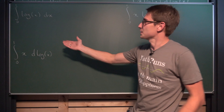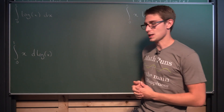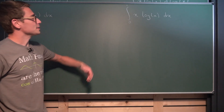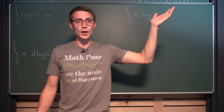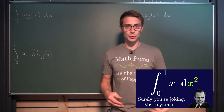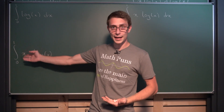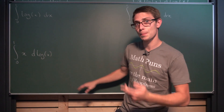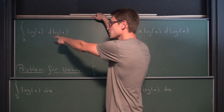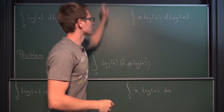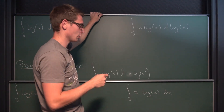The first is a standard integral — the natural log of x, integrated with respect to x. Next is the integral from zero to one of x times ln(x) dx. Then it gets more funky: we are going to integrate x with respect to the natural log of x, then integrate the natural log with respect to the natural log of x, and lastly integrate x times natural log with respect to the natural log of x.